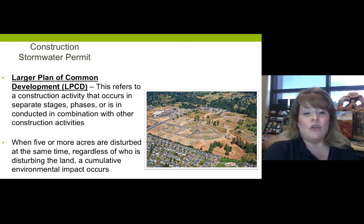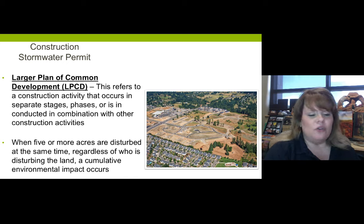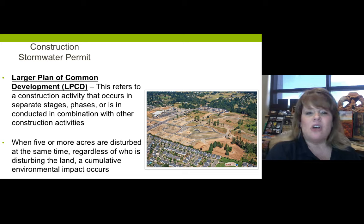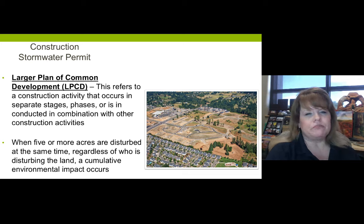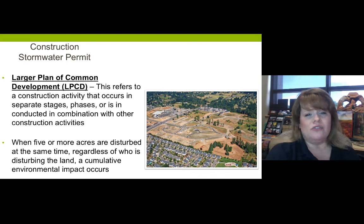There may be 30 or 40 homes being built at the same time. So when five or more acres are disturbed at the same exact time, regardless of who is disturbing the land, a cumulative environmental impact occurs because there's all this land that's been exposed and cleared for building. And when that washes off, it's not just washing off from one quarter-acre home site — it's washing off from all of those 30 or 40 houses going in at the same time.